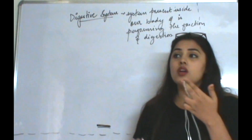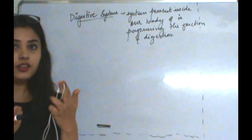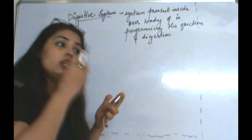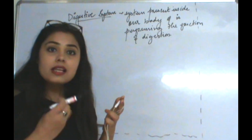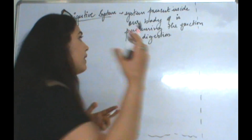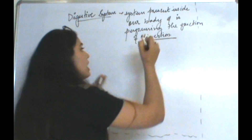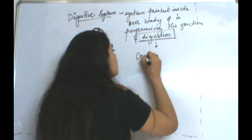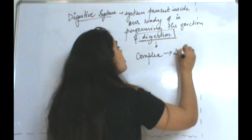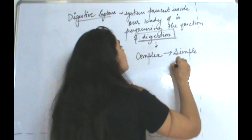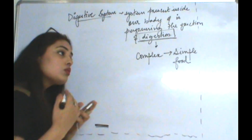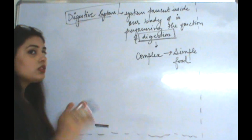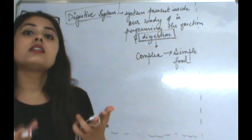So that complex food — how is it being converted? Suppose we're eating a chapati; it is in the form of a carbohydrate, but we need to convert that carbohydrate into simpler forms so that our cells can absorb them. This happens with the process of digestion. Digestion is a process in which complex food is converted to simple food. That is the process taking place in the digestive system.